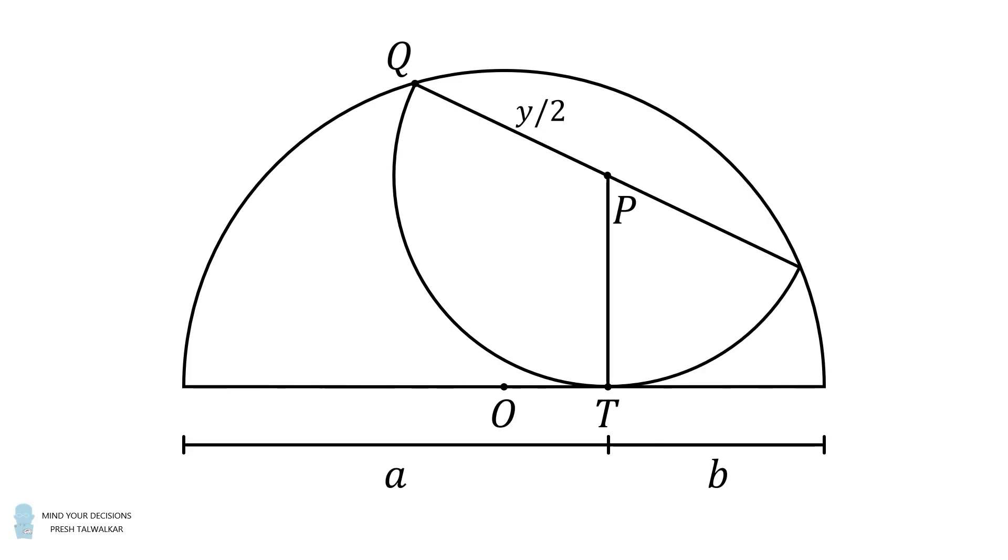Construct the radius PT. Because T is a point of tangency, PT will be perpendicular to the diameter of the large semicircle. Furthermore, it's a radius of the inscribed semicircle, so its length will be equal to y over 2.